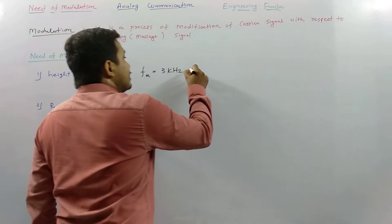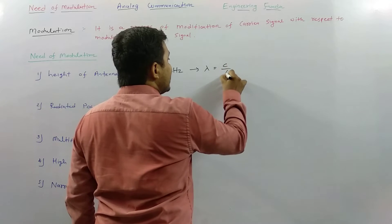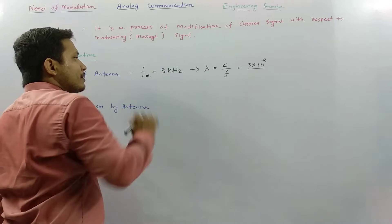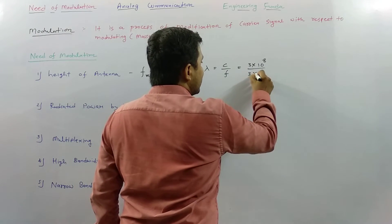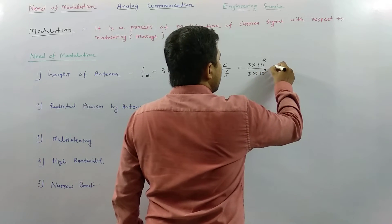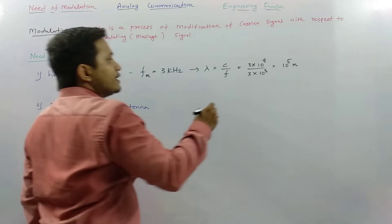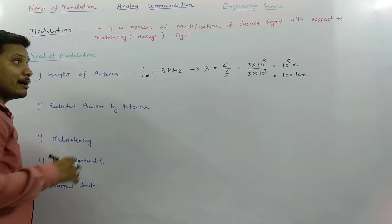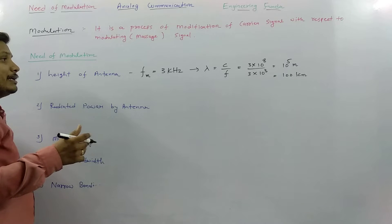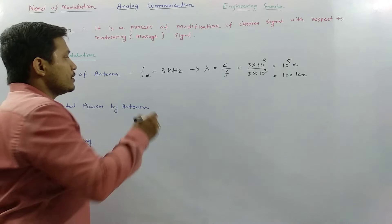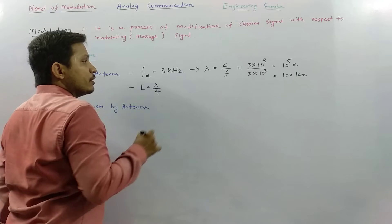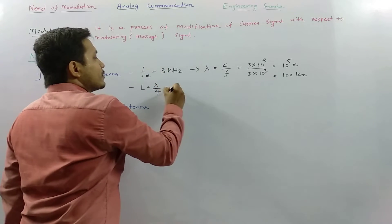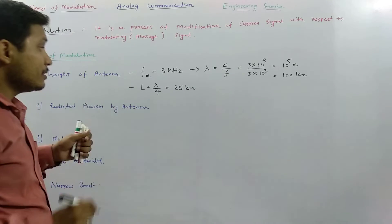If we calculate the wavelength for a 3 kHz signal: lambda = C / F, where C is the velocity of light, 3×10⁸ m/s, and F is 3 kHz (3×10³ Hz). This gives a wavelength of 10⁵ meters, or 100 kilometers. Since antenna size is typically lambda/4, we would need an antenna of 25 kilometers — which is practically impossible.